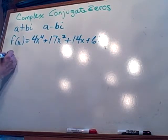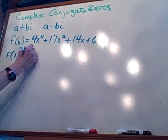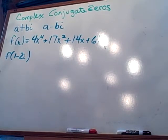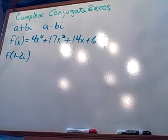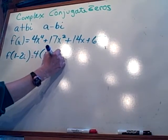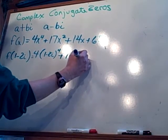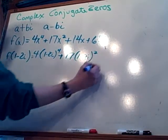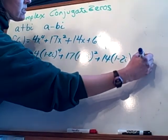So are you ready? Okay. So what we're going to actually do is we're going to evaluate f(1 minus 2i). There are different ways to evaluate this, but I'm just going to go back to the old evaluating method. So: four times (1 minus 2i) to the fourth, plus 17 times (1 minus 2i) squared, plus 14 times (1 minus 2i), plus 65.